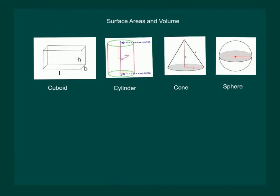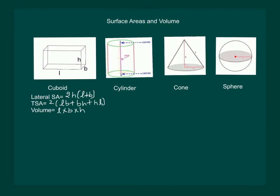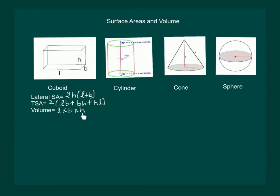We are familiar with solids like cuboid, cylinder, cone and sphere. Let us recall: lateral surface area of cuboid is given by 2 times height into length plus breadth. Total surface area is given by twice of length into breadth plus breadth into height plus height into length, and volume is given by L into B into H, that is length into breadth into height.